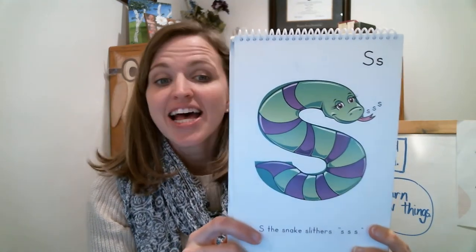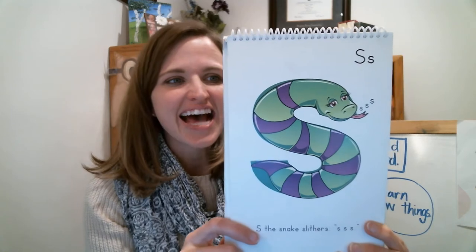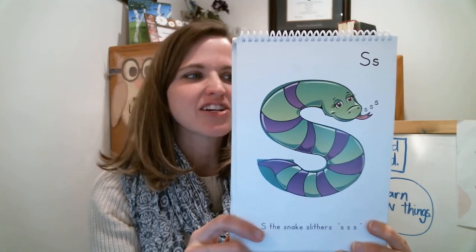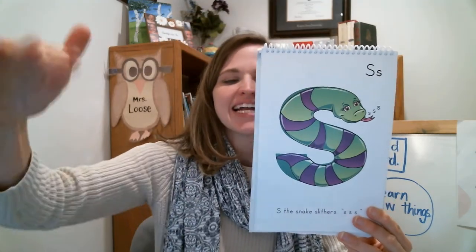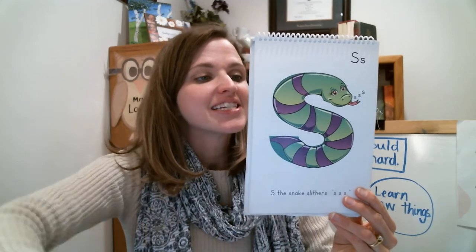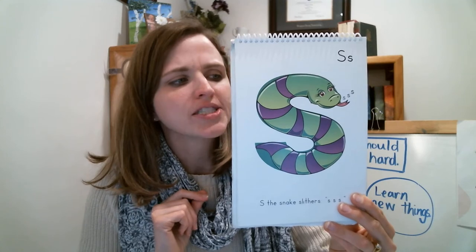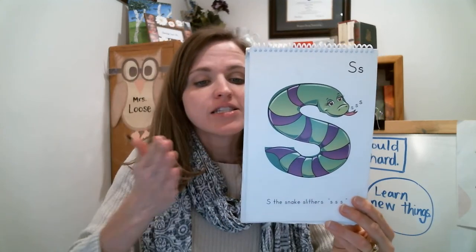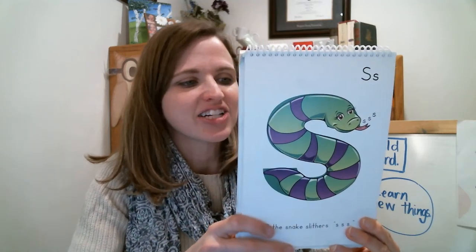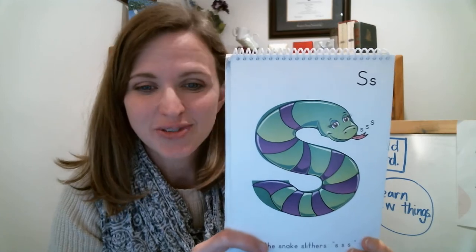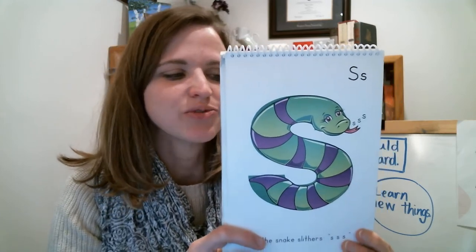S the snake says S S S as she slithers along the sunny seashore looking for a spot to sleep. She slithers from side to side in the sun. Suddenly a sailor on the sea sees the snake and says you should wear sunscreen or you will sunburn for sure. She says to the sailor, she slowly slithers into the shade away from the scorching sun to sleep. S the snake snoozes in the shade.